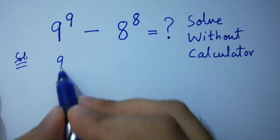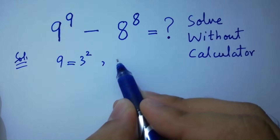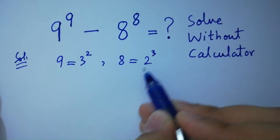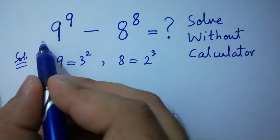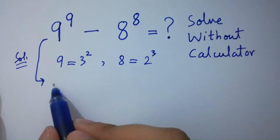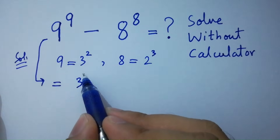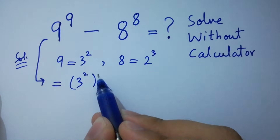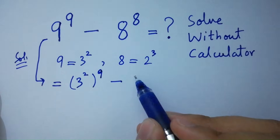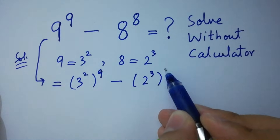Since 9 equals 3 squared — 3 times 3 is 9 — and 8 equals 2 cubed — 2 times 2 is 4, 4 times 2 is 8 — then it will be 3 to the power 2, to the whole power 9, minus 2 to the power 3, to the whole power 8.